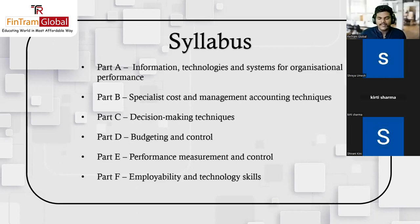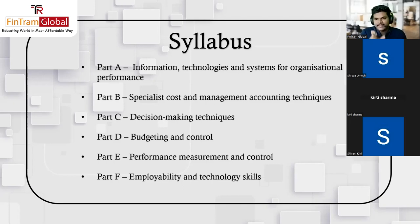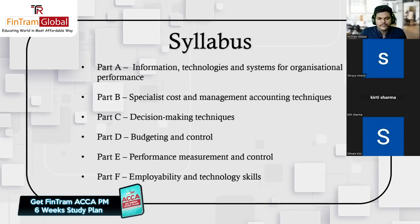The syllabus of Performance Management is partitioned into six syllabus areas. Part A, which is one of the easiest, is 'Information Technologies and Systems for Organizational Performance.' This syllabus area is completely theoretical — there's not much calculation. The overall objective of the PM syllabus is to understand the methodologies by which you can improve an organization's performance.